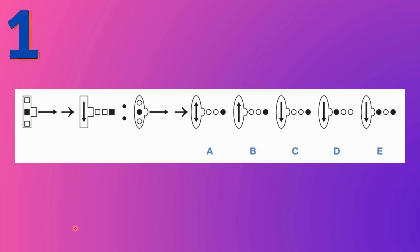First, let's understand the layout of the question. You can see a colon in between, with a left side and a right side. On the left side there are two patterns, and the first pattern is transformed into the second pattern, shown by the arrow. In the right side, you need to transform the given pattern into one of the options A to E.